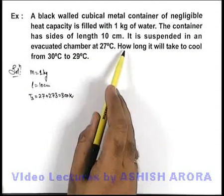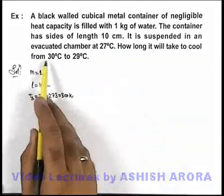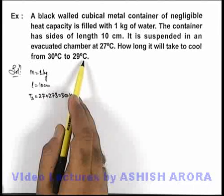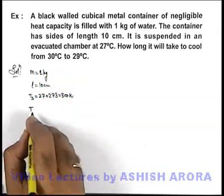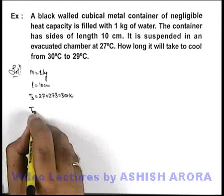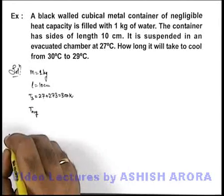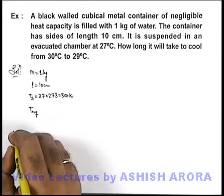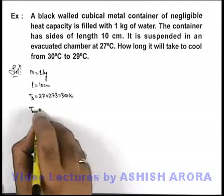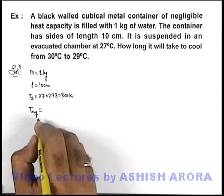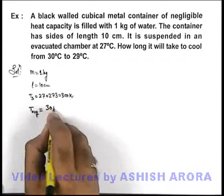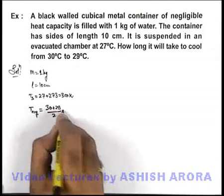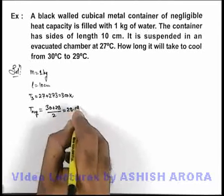It is asking how long it will take to cool from 30 degrees centigrade to 29 degrees centigrade. In this situation, if we find out the average temperature of the metal container, we can write this will be 30 plus 29 divided by 2, that will be 29.5 degrees centigrade.